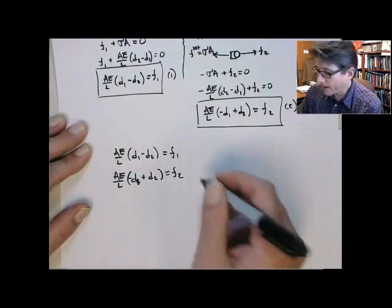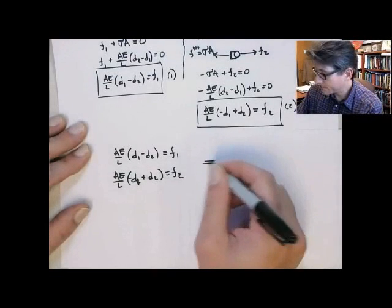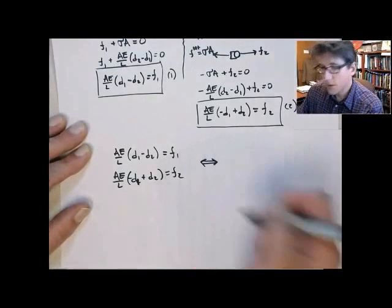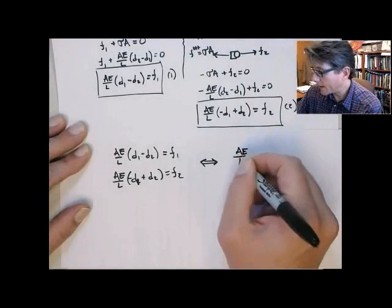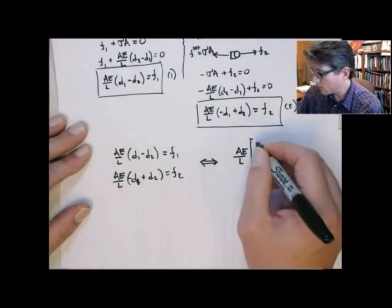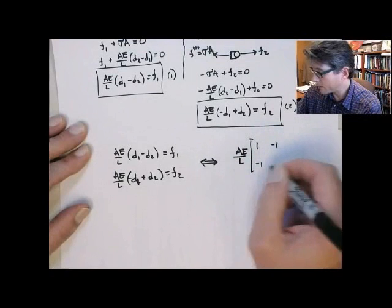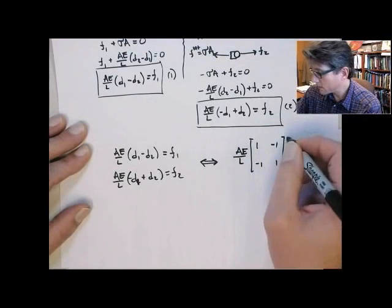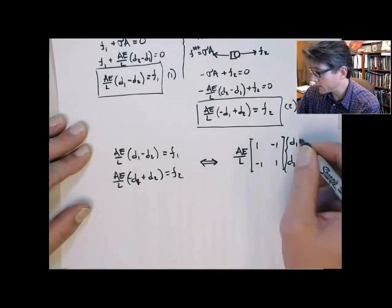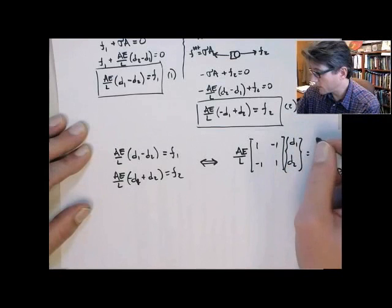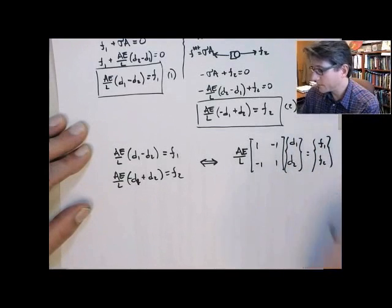Okay, this I can write in a matrix form, so these are equivalent. So this is the same as writing AE on L, 1 minus 1, minus 1, 1, D1, D2 equals F1, F2.